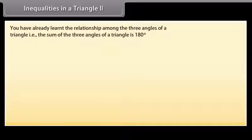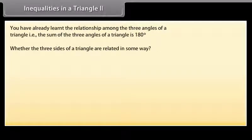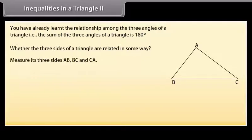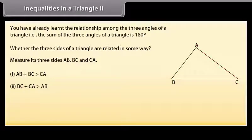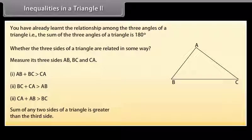We shall now study whether the three sides of a triangle are related in some way. Draw a triangle ABC and measure its three sides AB, BC and CA. We observe that: (1) AB plus BC is greater than CA; (2) BC plus CA is greater than AB; and (3) CA plus AB is greater than BC. Thus, we conclude that the sum of any two sides of a triangle is greater than the third side.